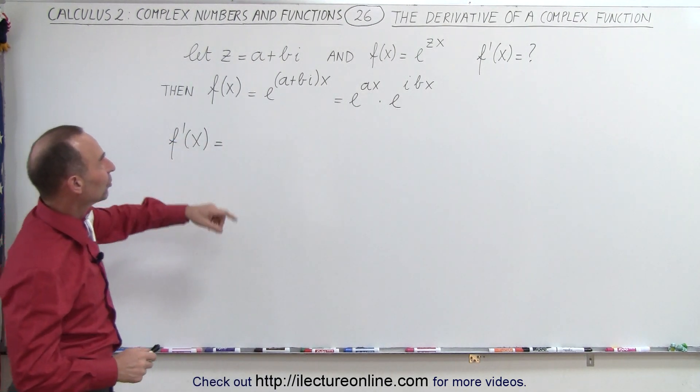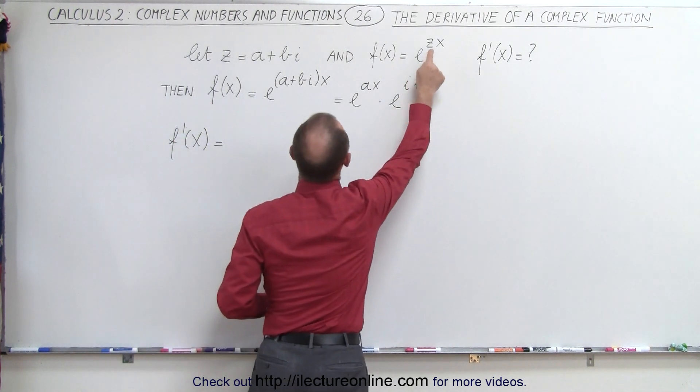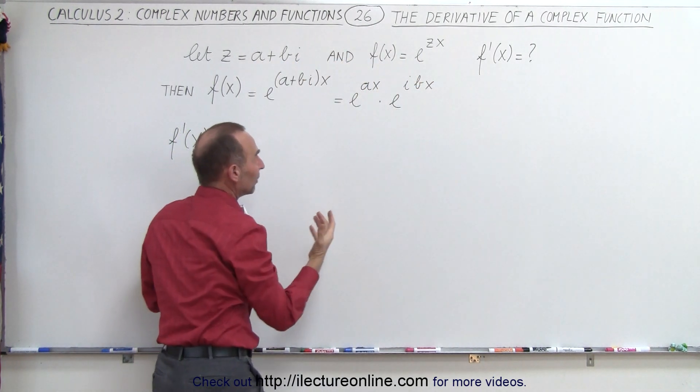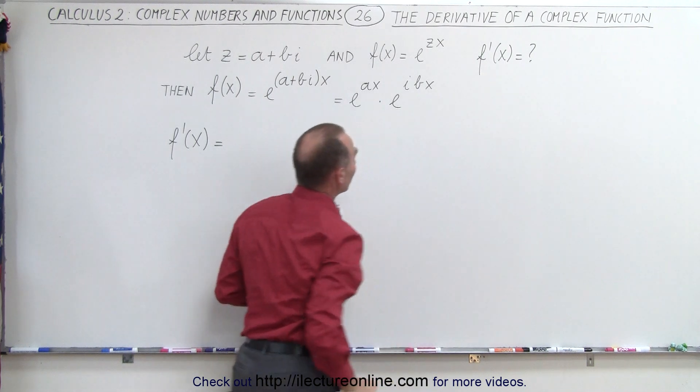So we're going to take the function e to the zx, where z is equal to a plus bi. And the question is, what is the derivative of that?